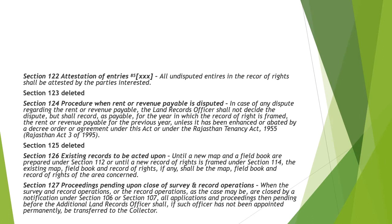Section 126 — Existing records to be acted upon: until a new map and field book is prepared under section 112 or a new record of rights is framed under section 114, the existing ones will be the concerned ones. Section 127 deals with proceedings pending upon close of survey and record operations. When the survey and record operations are closed by notification under section 106 or section 107, all applications and proceedings pending before the additional land records officer shall, if such officer has not been appointed permanently, be transferred to the collector.